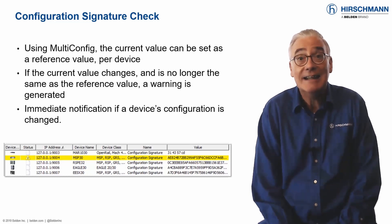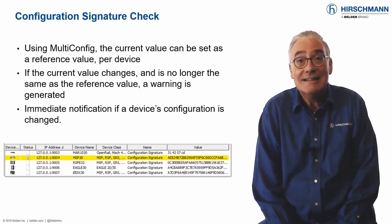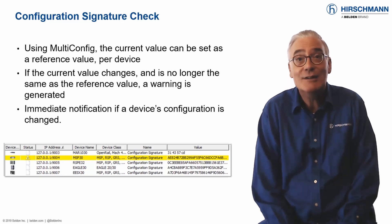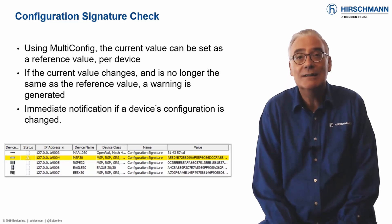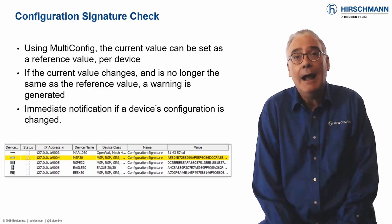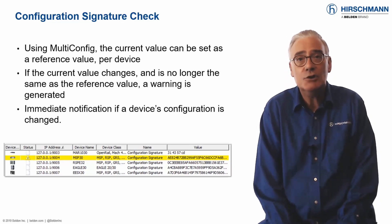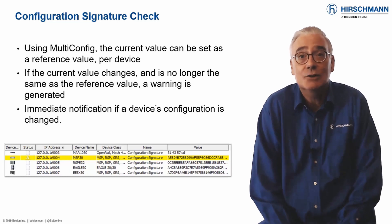As a consequence, the network fails. Seeing the result, the user quickly reverts the change. How can you prove that the switch configuration was changed?